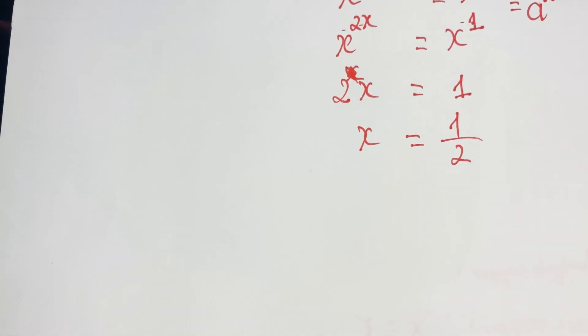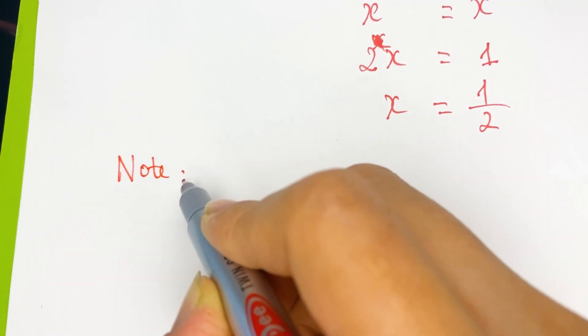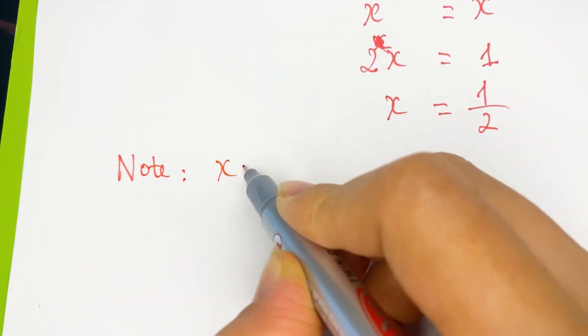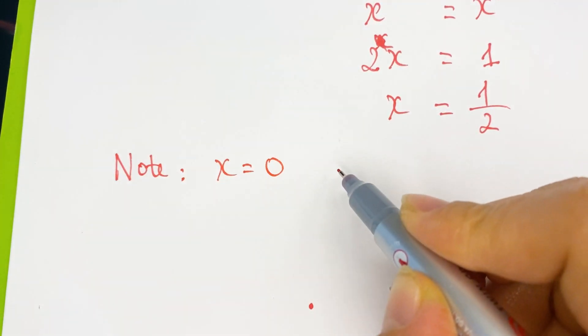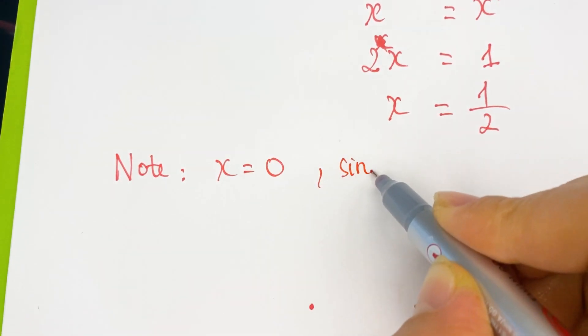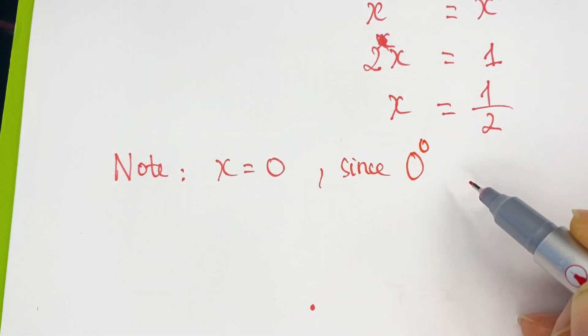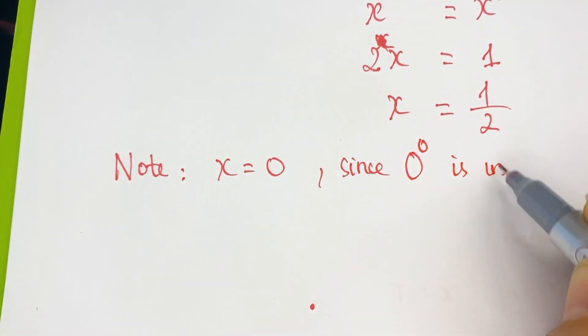And then you can note, everyone note, because when x equal to zero, zero is not a solution, since zero power zero is indeterminate.